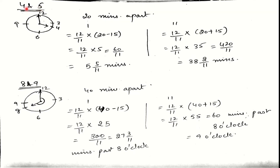For 4 to 5 o'clock: the time gap is 20 minutes. Since the gap is 15 minutes or more, we add 15 and subtract 15. This gives two points: 5 and 5/11 minutes past 4 o'clock, and 38 and 2/11 minutes past 4 o'clock. Similarly, for the time ranges 5 to 6, 6 to 7, and 7 to 8, we subtract 15 as well as add 15 from the time gap between the two hands.